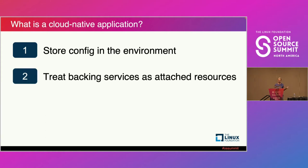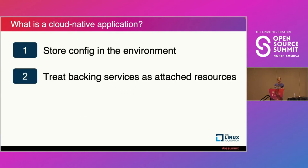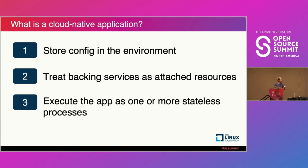A second principle is to treat backing services as attached resources that are loosely coupled with your application. That means you should be able to swap quite easily — for example, talking to another database, using another mailing service, another bucket, or another external API — you should be able to swap fast and without any consequences in your code. Your code should implement the necessary abstractions to enable that.